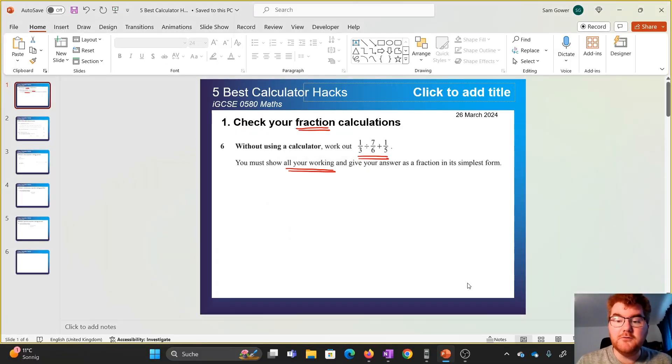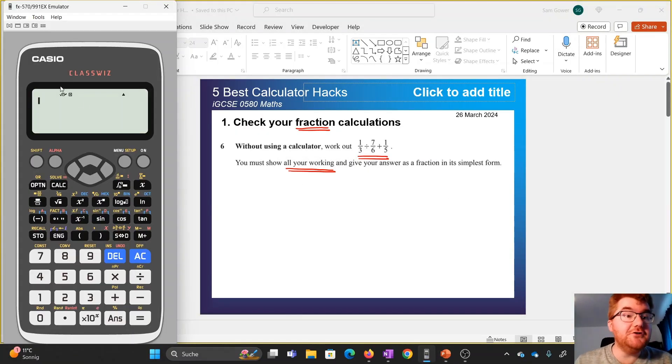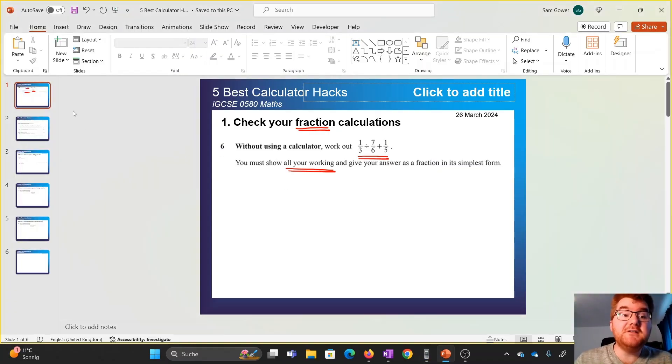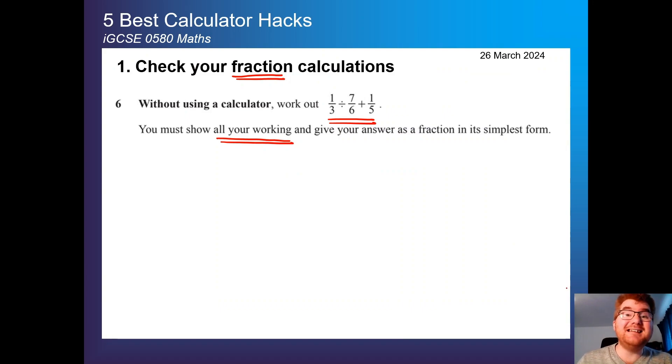If we go to our calculator here, so I'm using this version of the ClassWiz, the 991EX calculator, you can just simply use your fraction button. So we can type this in as 1 over 3, then we have divided, fraction button 7 over 6, and it will follow BIDMAS here, so plus 1 over 5. You can check in the exam that you're getting 17 out of 35, and guarantee you have those 3 or 4 marks for this particular question. So a very important hack. You can use this as a double check.